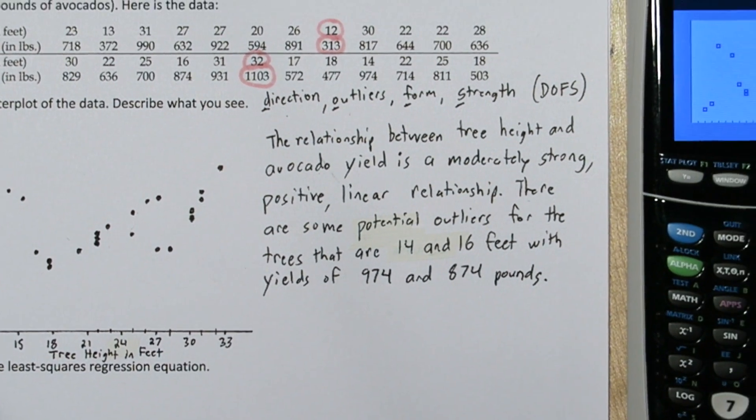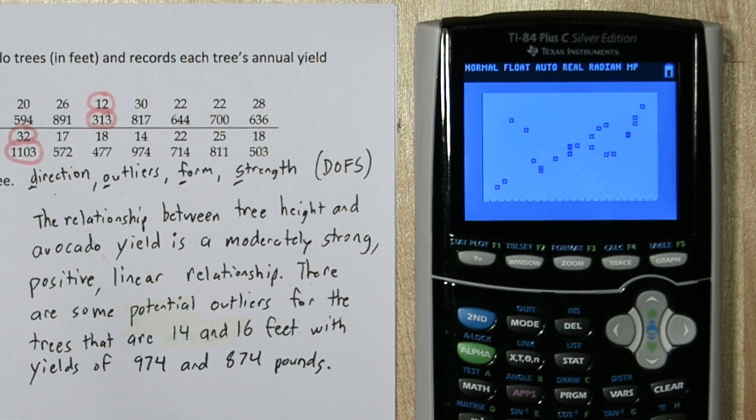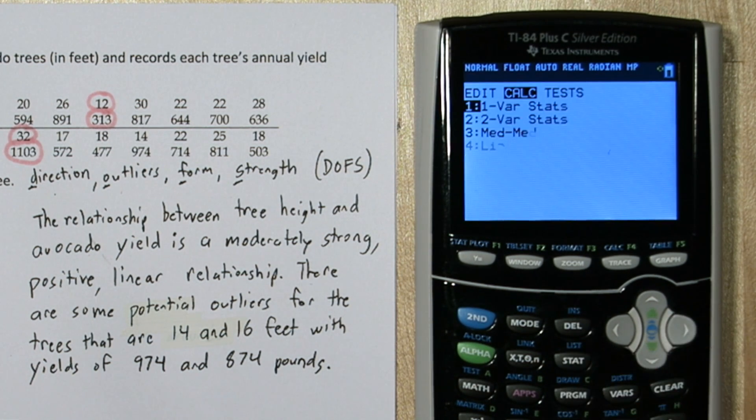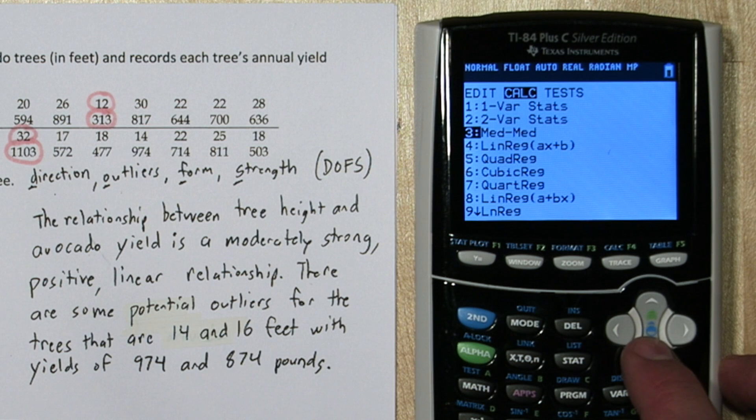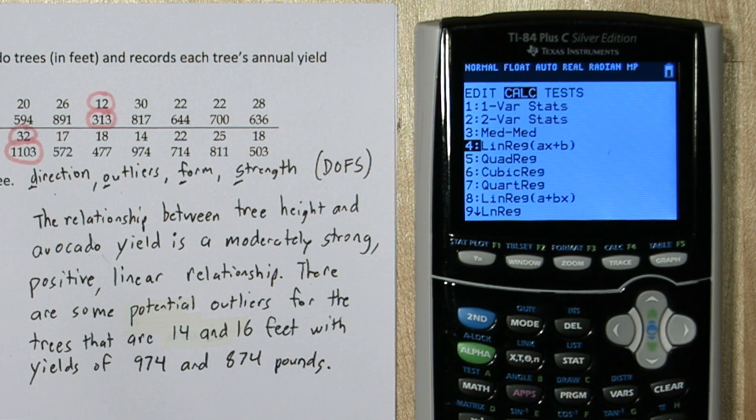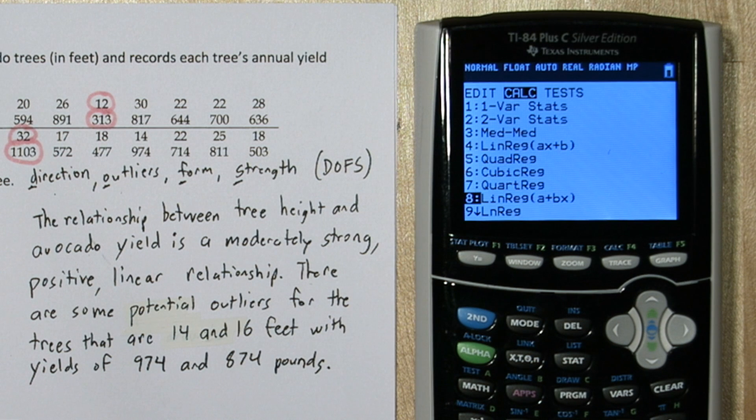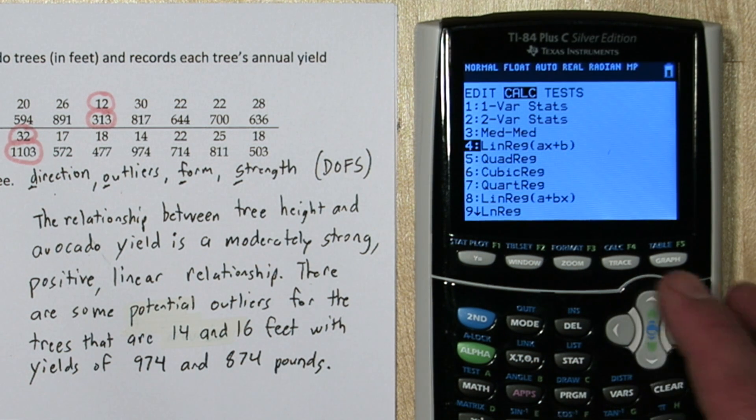With the data already in our list, calculating the least squares regression line is pretty easy. If you press the stat button again, and go to calculate, you have two options. You can use option 4, which will give you the slope and then the intercept, or you can choose option 8, which gives you the intercept, then the slope. I like option 4.